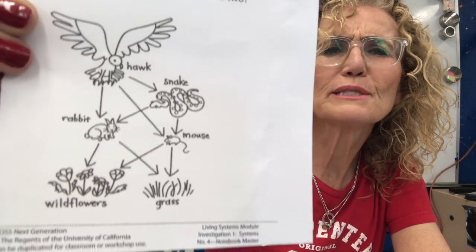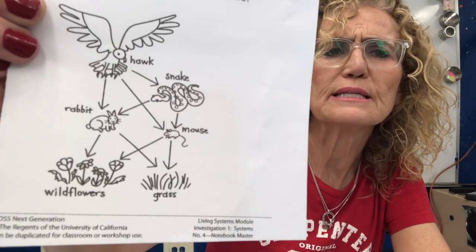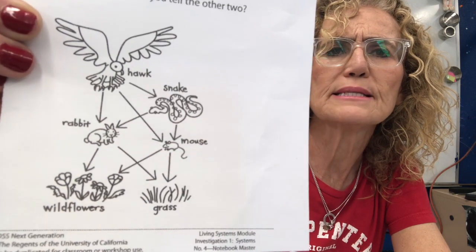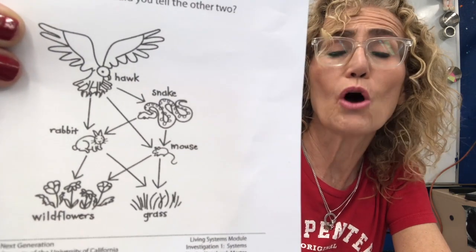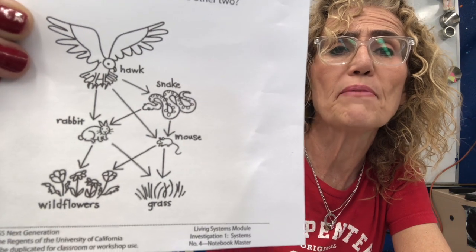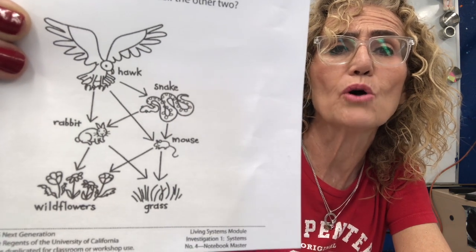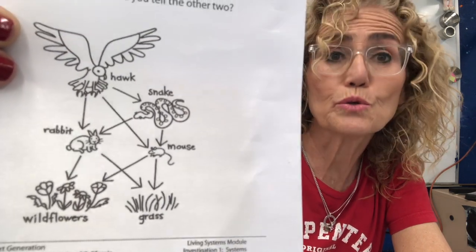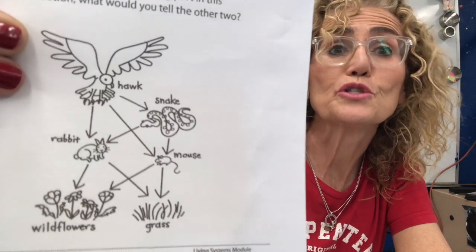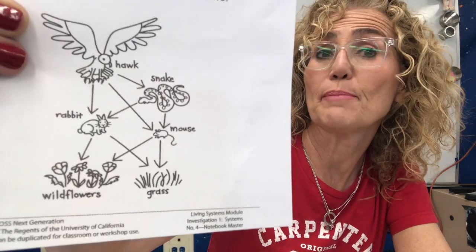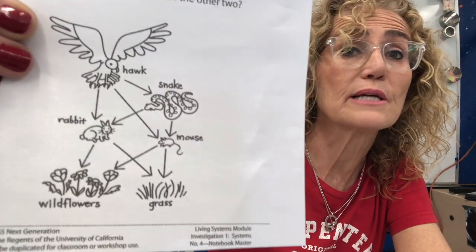What else? We see flowers, grass, rabbits, and hawk — those are the names of the organisms. But instead of naming them that, they should be called producers and consumers, and you could talk about herbivores, carnivores, and omnivores.